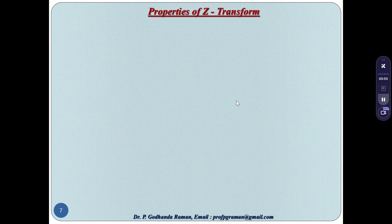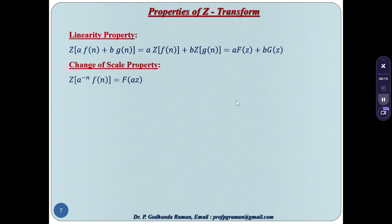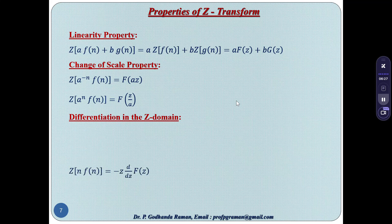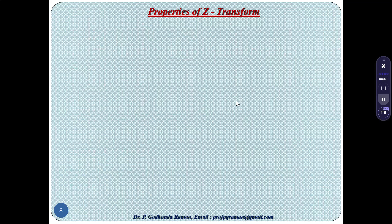Properties of Z-transform: The first property is the linear property — Z{a·f(n) + b·g(n)} = a·Z{f(n)} + b·Z{g(n)}, where Z{f(n)} = F(z) and Z{g(n)} = G(z). Change of scale property: Z{a^(−n)·f(n)} = F(az). Z{a^n·f(n)} = F(z/a). Differentiation in the z-domain: Z{n·f(n)} = −z·(d/dz)F(z). First shifting theorem: Z{e^(−at)·f(t)} = F(z)|_{z→z·e^(aT)}. Z{e^(at)·f(t)} = F(z)|_{z→z·e^(−aT)}.